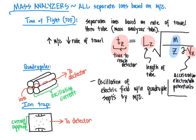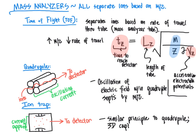The detector then detects those different ions exiting the instrument. As a summary: the ion trap operates on a similar principle to the quadrupole, as both rely on oscillating current to separate ions. The key difference is that the ion trap uses a 3D capture box where, at certain applied currents, certain mass to charge ratios are able to exit the trap, enter the detector, and generate the mass spectrum.